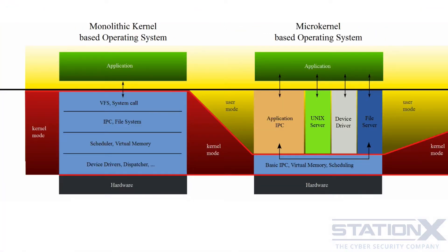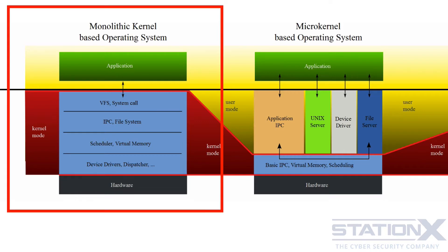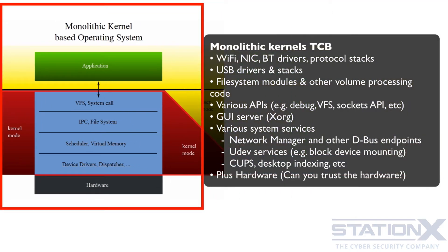Let's talk about kernel design for a minute. Most operating systems — Unix, Linux, BSD — use a monolithic kernel architecture, which means lots of code runs with high levels of privilege, or what is called the trusted computing base or TCB. The TCB is all the hardware, firmware, and software components that are critical to a system's security. These are examples of monolithic kernel TCB components that you have to trust are good.